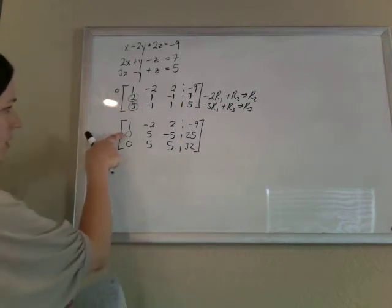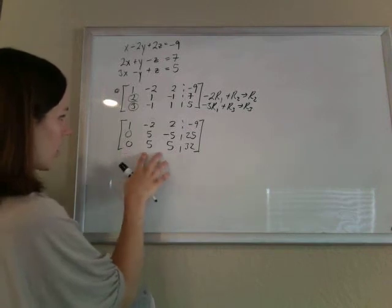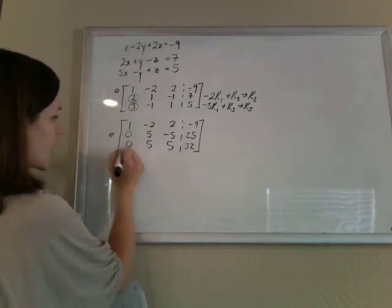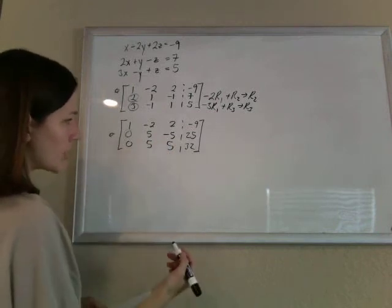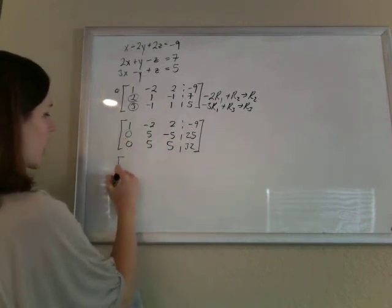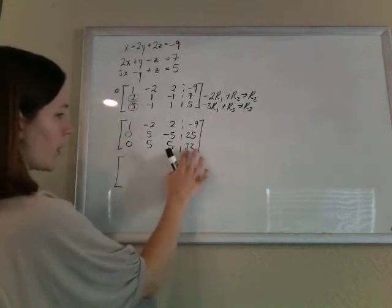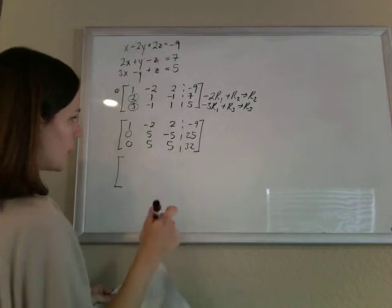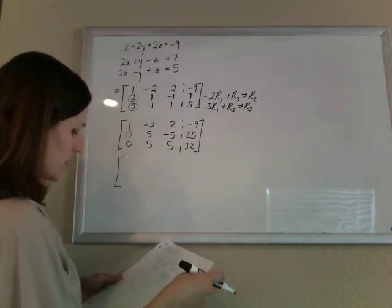So zeros in the first column. Hooray! Now our aim would be to use the second row to get zeros in the second column. But before I do that, I'm going to clean this guy up a bit. If I can divide every single piece of a row by the same number, that will make it simpler.